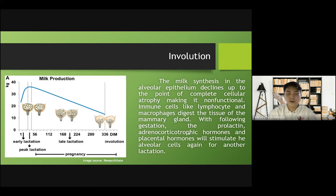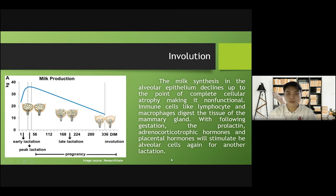With the following gestation, prolactin, adrenocorticotropic hormones, and the placental hormones will stimulate the alveolar cells again for another gestation, or what we call lactation. So that summarizes the topics for mammogenesis, lactogenesis, and galactopoiesis. Thank you for listening.